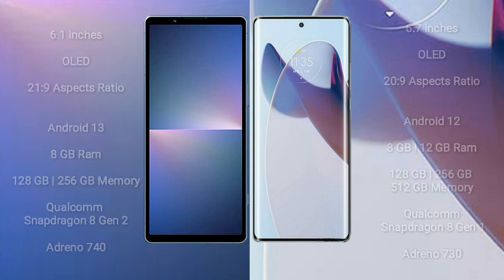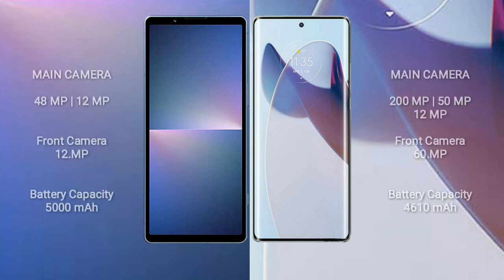The Sony Xperia 5 Mark V features a dual rear camera setup with 48MP plus 12MP, and a 12MP front camera. The Motorola Moto X30 Pro features a triple rear camera setup with 200MP plus 15MP plus 12MP, and a 16MP front camera. The Sony Xperia 5 Mark V has a 5000mAh battery with 25W fast charging support.